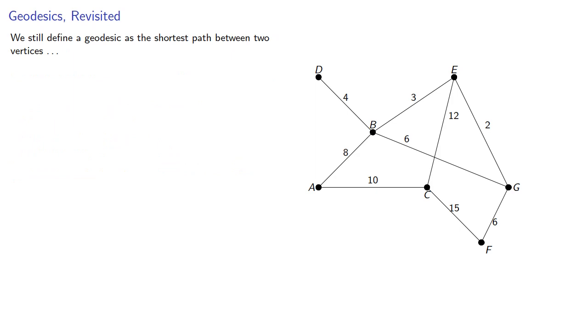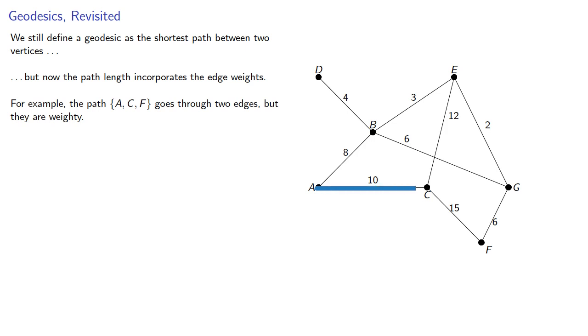Now, we'll still define a geodesic as the shortest path between two vertices, but now the path length incorporates the edge weights. For example, the path ACF goes through two edges, but they're weighty at 10 and 15, so this path has weight 10 plus 15, which is 25.